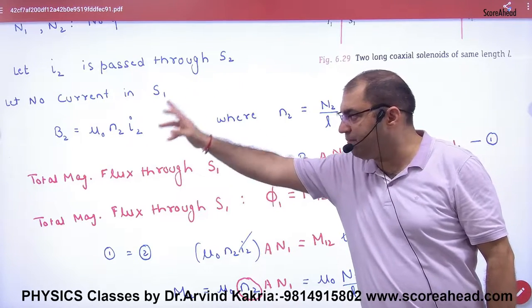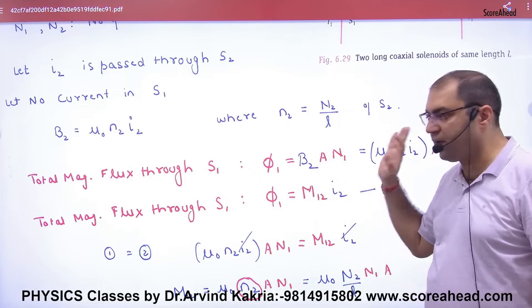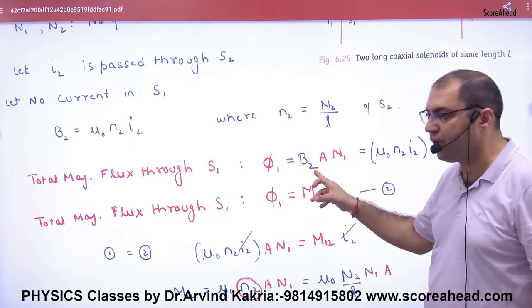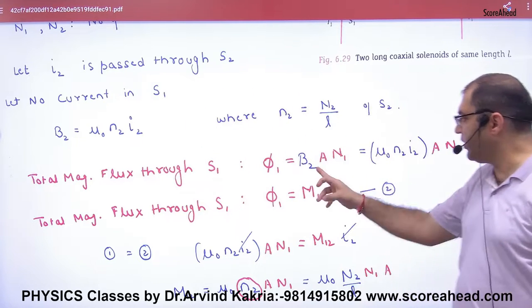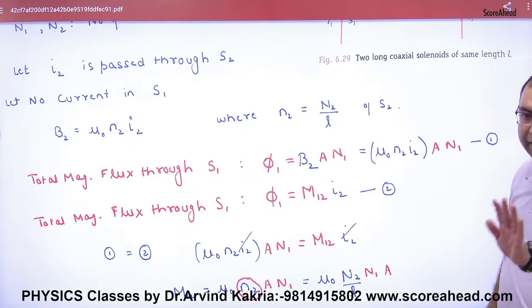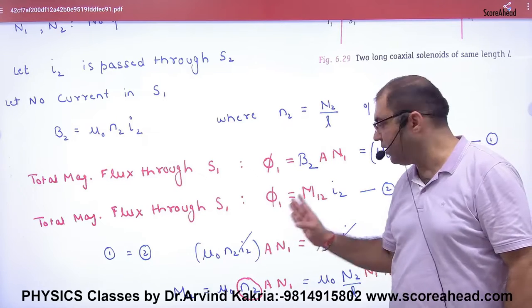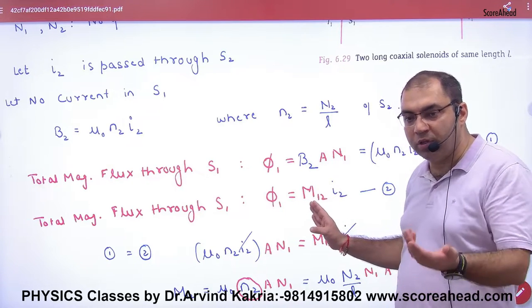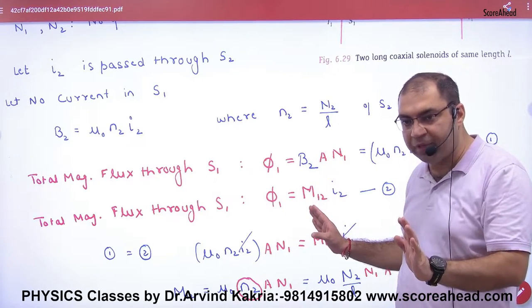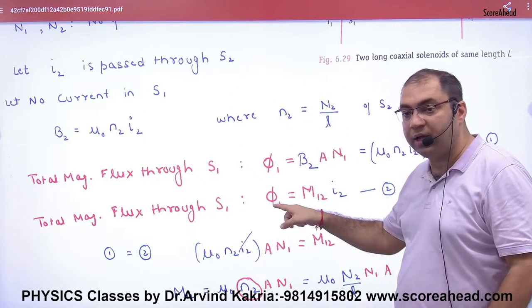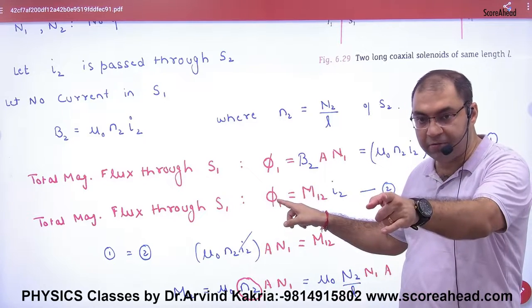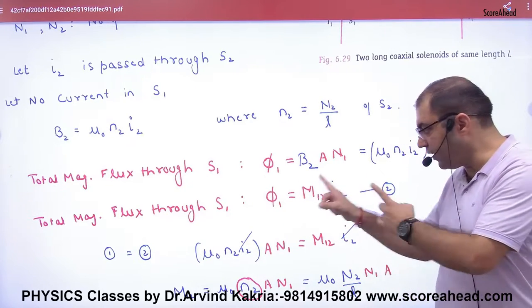Current goes in primary, B of primary is formed, flux of secondary is calculated, but in secondary's flux, B of primary is present. Current is primary's i2, flux is secondary's. Are you understanding this step?